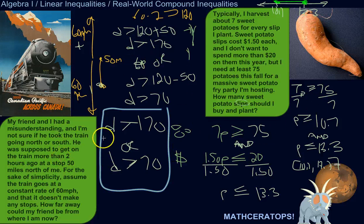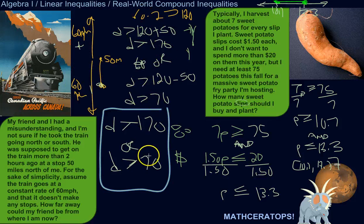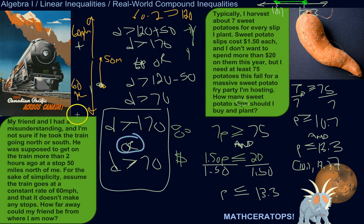The point is: use the information in the word problem to translate it into inequalities. Write what you know, write each piece, draw diagrams until the situation makes sense. Then pay attention to whether you're looking at 'or' or 'and' — do both conditions have to be true, or could either one be true?